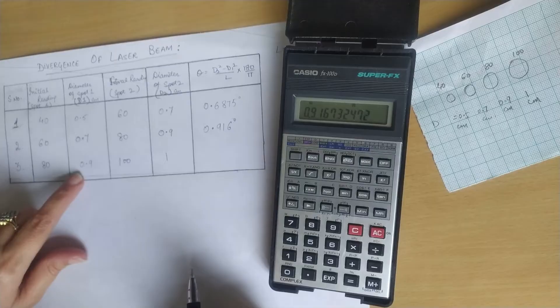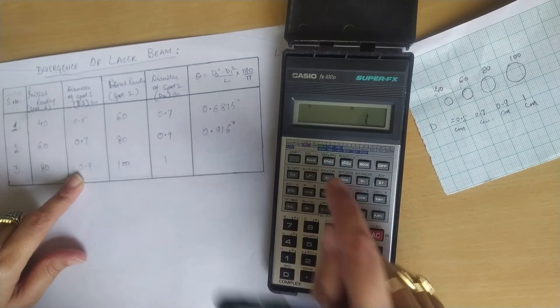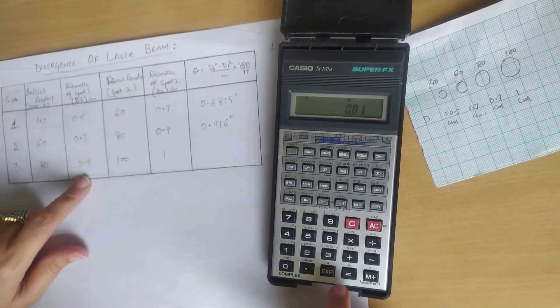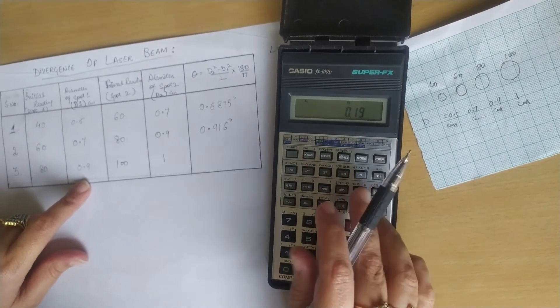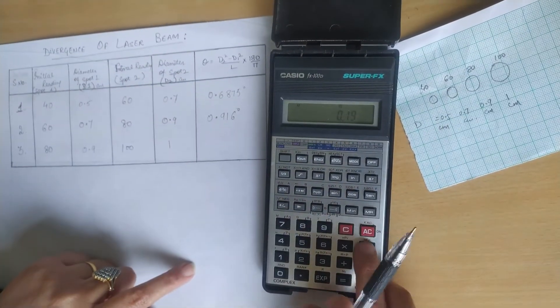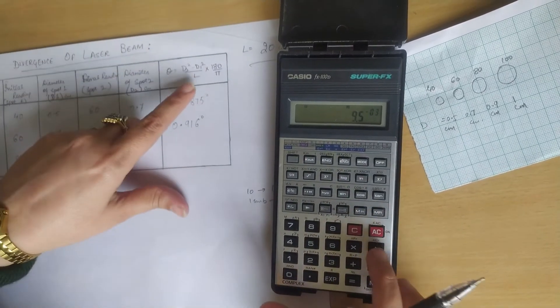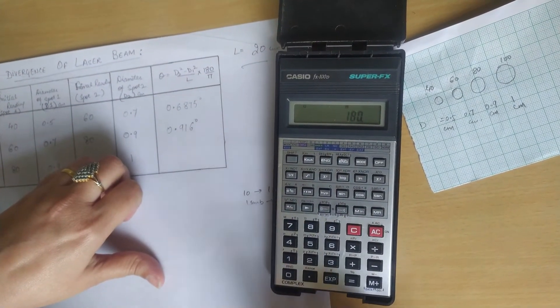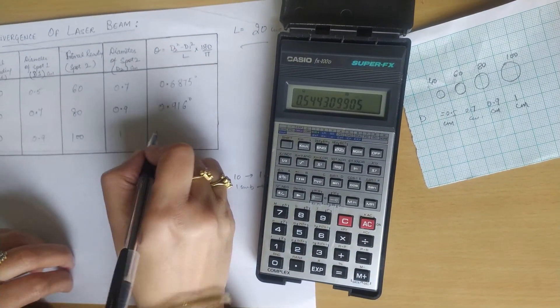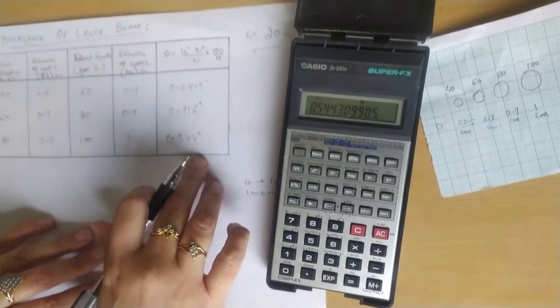Moving towards the last reading. Here D2 is 1 and D1 is 0.9. So 1² - 0.9² = 0.19, divided by L that is 20 cm, times 180 divided by π. This comes out to be 0.544 degrees. So these are the answers.